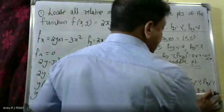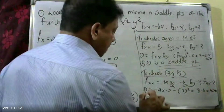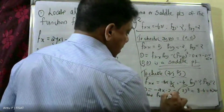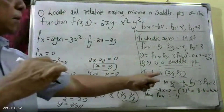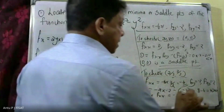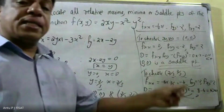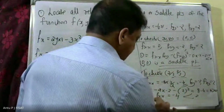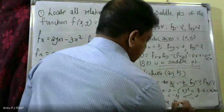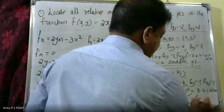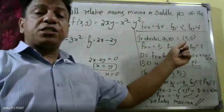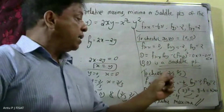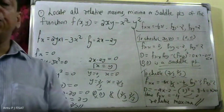The value of D equals 4, which is greater than 0. Also, fxx at the critical point (2/3, 2/3) equals minus 4, which is less than 0. Since D greater than 0 and fxx less than 0, the point (2/3, 2/3) represents a relative maximum. Therefore, (0, 0) is a saddle point and (2/3, 2/3) is a relative maximum.